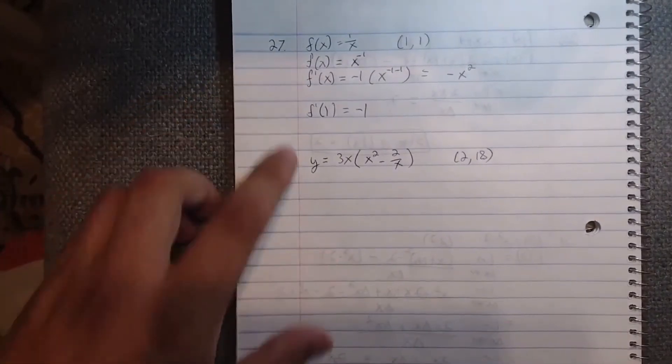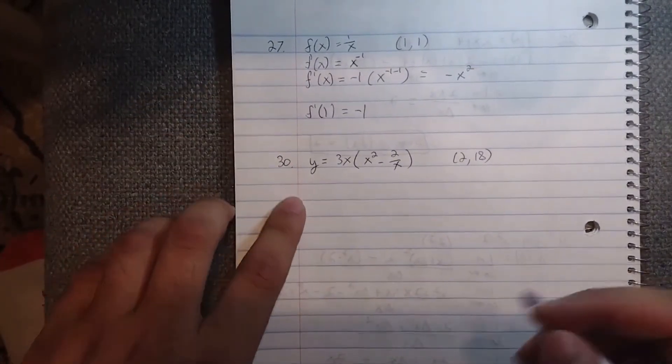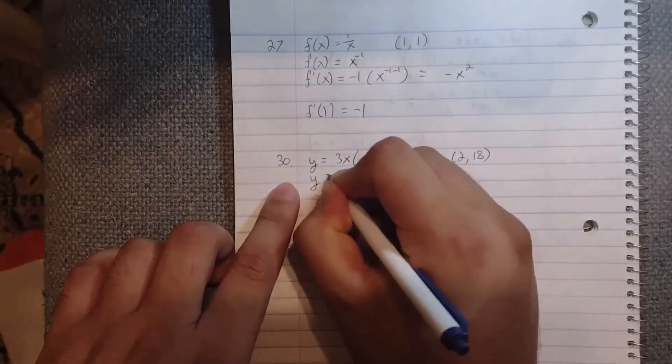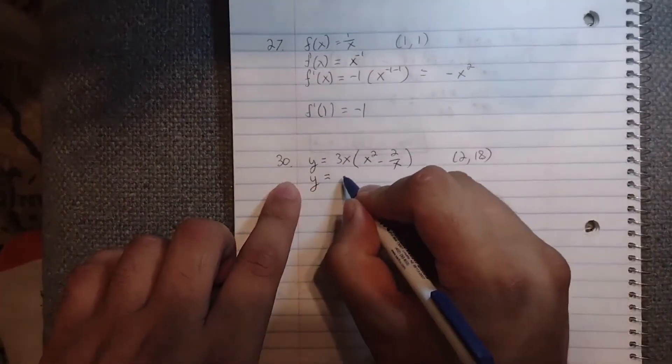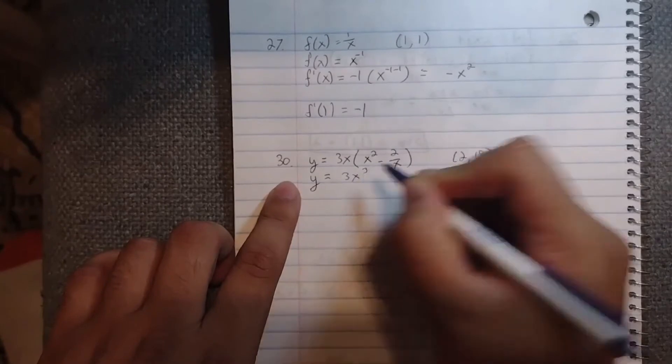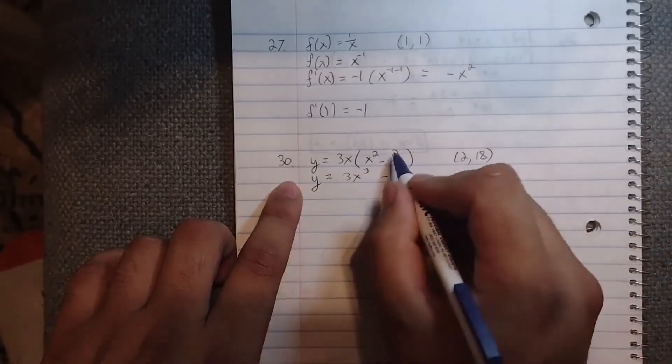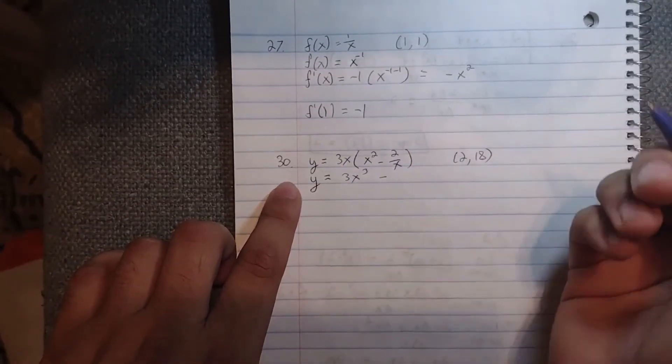Same as we did up here, let's simplify it and write it in a form we're more comfortable with. y equals—distribute the 3x out—3x³, and 3x times 2/x is 6, so y = 3x³ - 6.